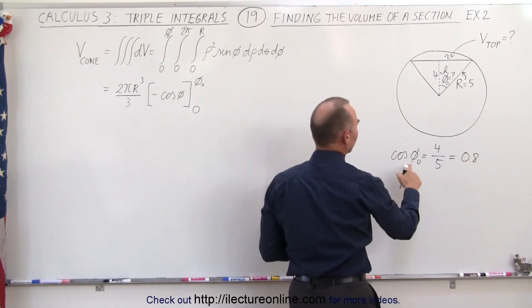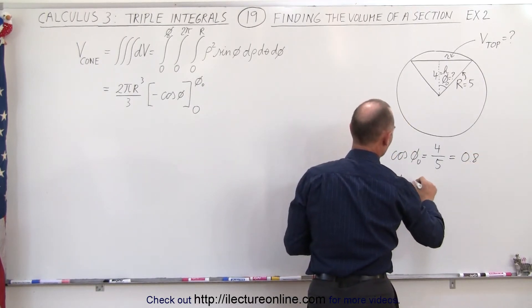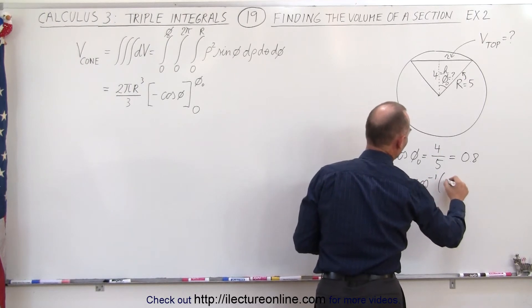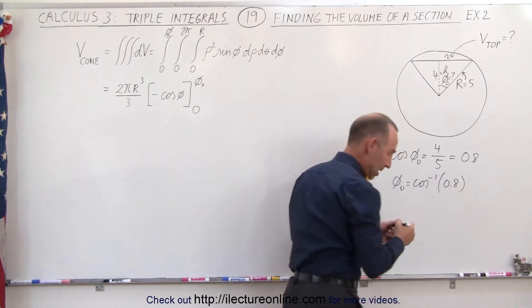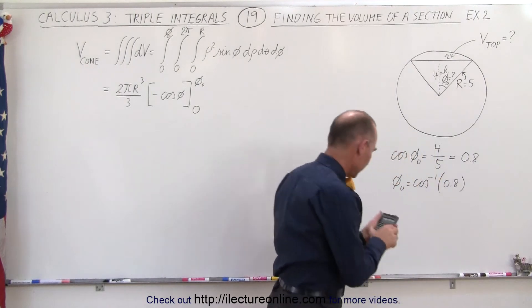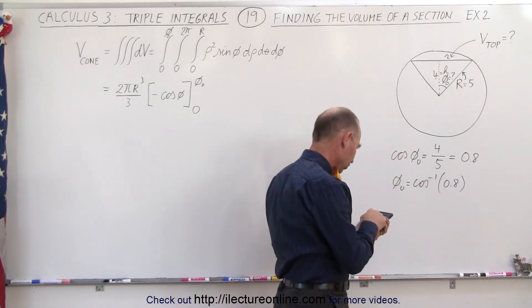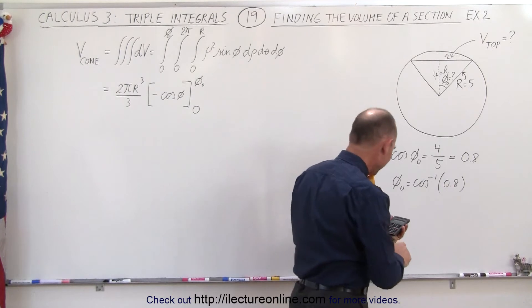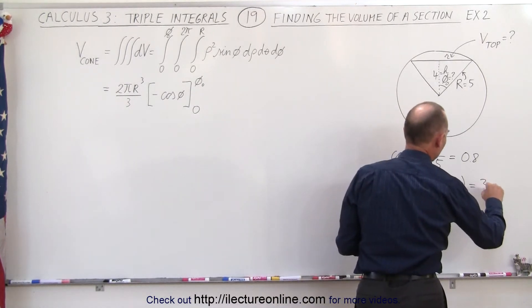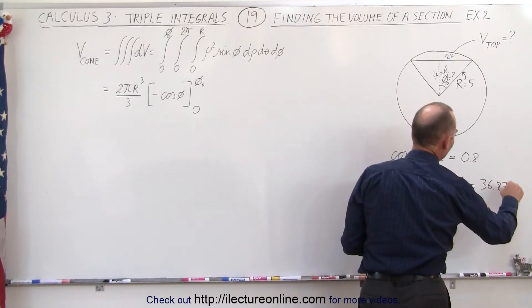And that means that the angle φ is equal to the inverse cosine of 0.8. And let's see here, 0.8, take the inverse cosine, that's 36.87 degrees.